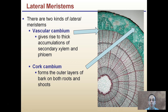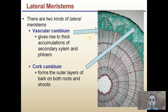Now these lateral meristems — there are two types. The first being vascular cambium, which gives rise to thick accumulations of secondary xylem and phloem, located right here. The cork cambium forms the outer layer of bark on both roots and shoots, located in the layers right here. We can see the vascular cambium as a distinct separation between these two regions, and our cork cambium, a little bit harder to see, but there is definitely a distinctive line here.